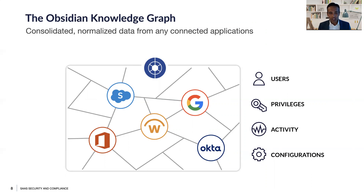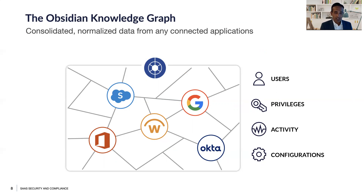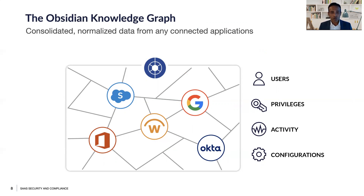Once you have all of these in a single graph, you can model what normal is for your organization, for a user, for a peer group. By having this understanding, you're able to recognize if there's a compromise where an attacker has stolen a token and is acting as a user but behaving very differently. You're able to recognize if an insider's activities have suddenly changed. You're able to not only recognize configuration drift, but also the activities related to it — giving you a true understanding of the risk and enabling a conversation with your business partners.